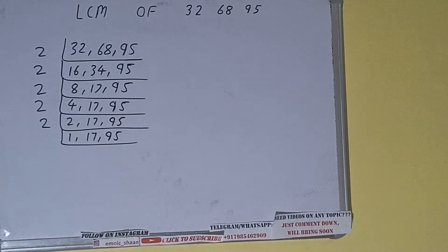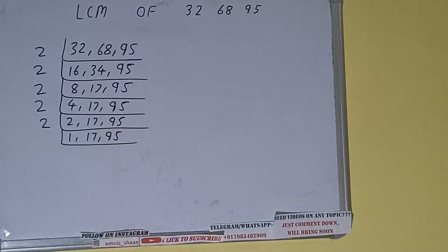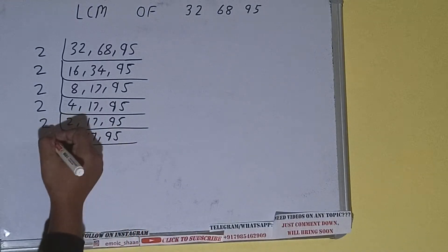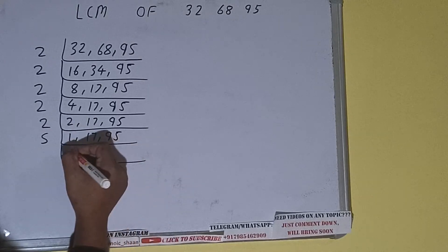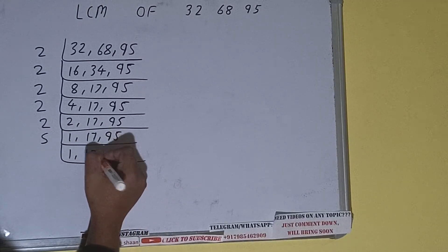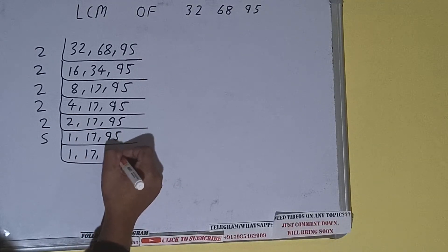Is any number divisible by 3? None of the numbers are, so we'll check with the next lowest prime number, which is 5. Is any number divisible by 5? The second number — 95 — is divisible by 5, so we divide it. The first number will remain 1, the second number will remain 17, and the third number will become 19.